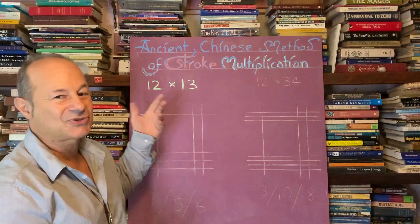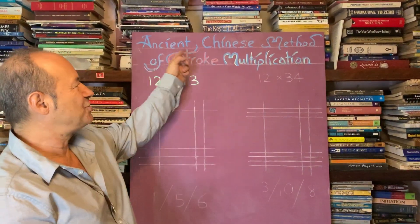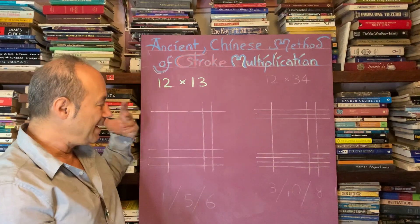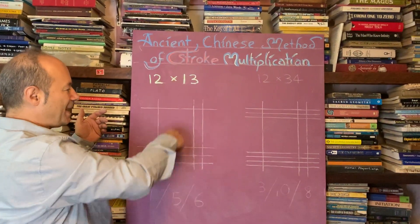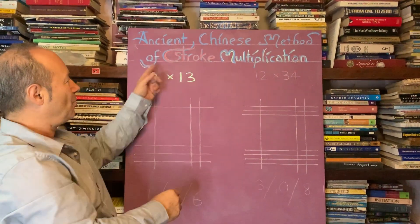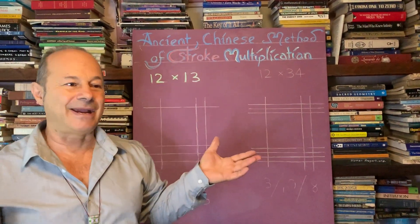But apparently, according to the sources that I've studied, this is an ancient Chinese method and we need to give it a name because I'm just going to use bars or strokes. So I'm calling it the stroke multiplication just to give it a name.